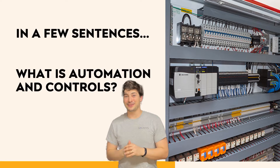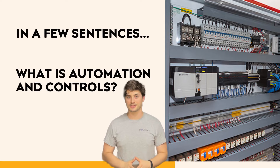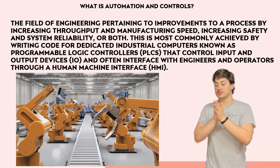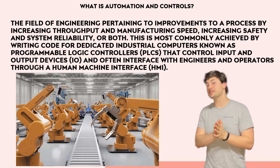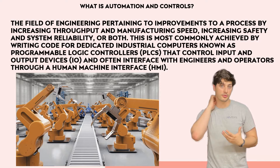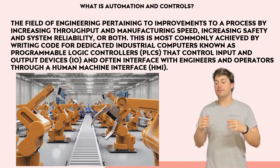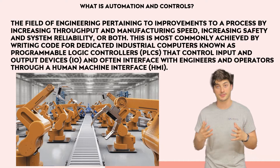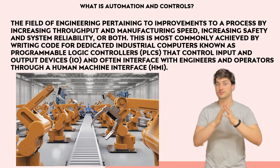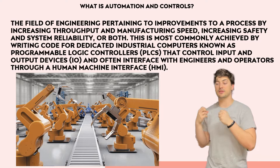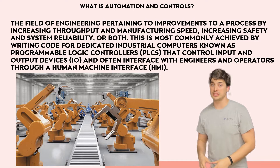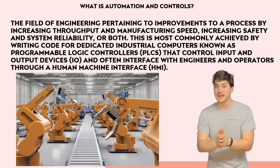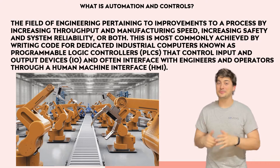If you're completely new to the field, in just a few sentences, what is controls and automation engineering? In my words, it's the field of engineering pertaining to improvements to a process by increasing throughput and manufacturing speed, increasing safety and system reliability, or both. This is most commonly achieved by writing code for a dedicated industrial computer known as a programmable logic controller or PLC, that controls input and output devices referred to as I/O, and often interfacing with engineers and operators through a human machine interface or HMI. The essence of it is: we make things faster, higher quality, or safer — and ideally all three.